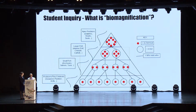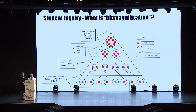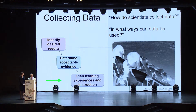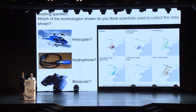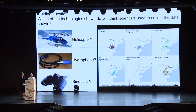As classes began unpacking the guiding questions, students themselves began forming questions of their own. One student came across the word biomagnification in one of the resources provided and wanted to understand it further. In his quest, he located his own resources and synthesized his new understandings with the pyramid model the class had learned earlier. Next, students explored how scientists collect data and what scientists do with that data. We asked students to consider how various technologies could be used to collect certain types of data — this exercise helped students put on the hat of a scientist and set the stage for a field trip.